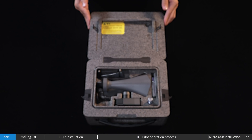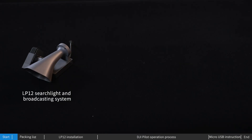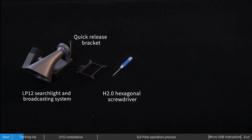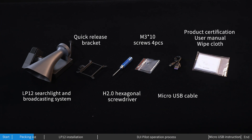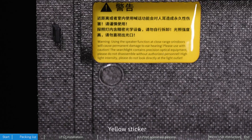Inside the box is an LP12 searchlight and broadcasting system, quick release bracket, H2.0 hexagonal screwdriver, M3×10 screws (4 PCS), micro USB cable, product certificate, user manual, wipe cloth, and yellow sticker.